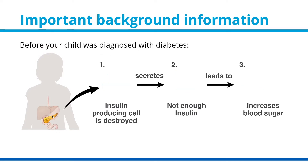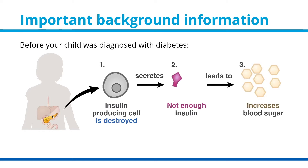Before your child was diagnosed with diabetes, in Step 1, their insulin-producing cells were destroyed by their immune system. In Step 2, this resulted in not enough insulin being made to move all the sugar or glucose into the cells for energy. In Step 3, this caused blood sugar levels to increase, resulting in high blood sugar symptoms.